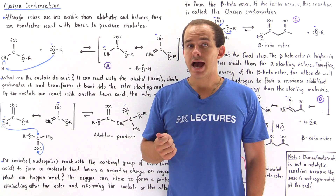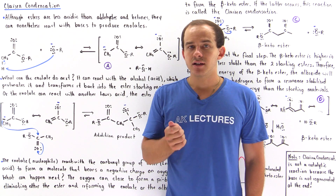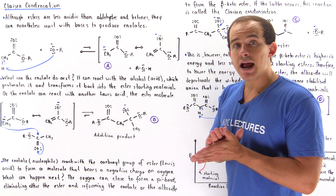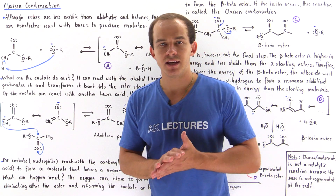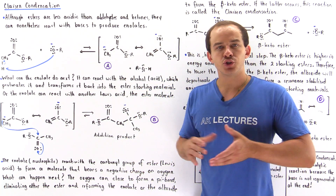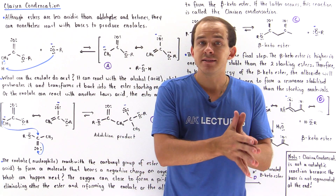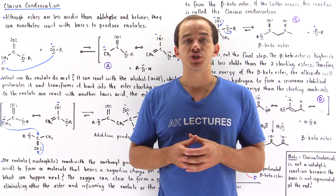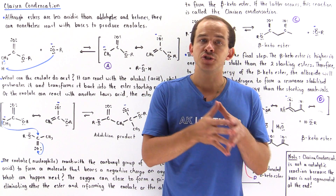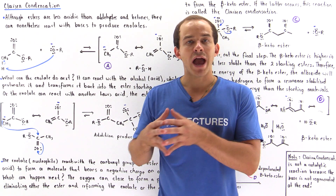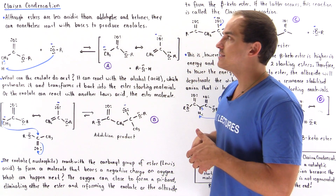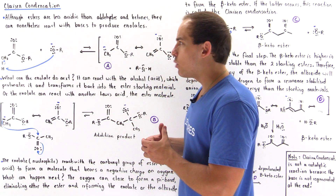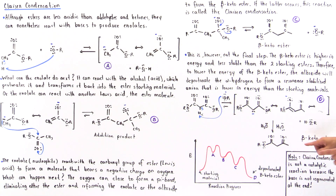Although esters are less acidic than aldehydes or ketones, just like aldehydes and ketones, esters can also undergo condensation reactions. Recall in our discussion on aldehydes and ketones, when they react with bases they produce aldols or beta-hydroxy molecules. In a similar way, esters can undergo reactions in the presence of a base to form a condensation product known as the beta-ketoester. This reaction is known as the Claisen condensation.